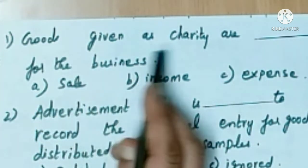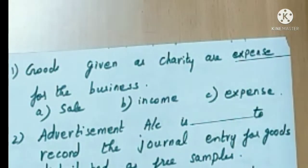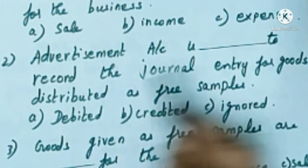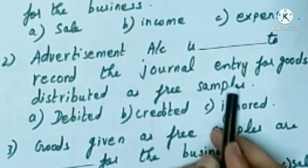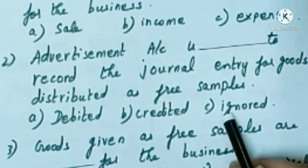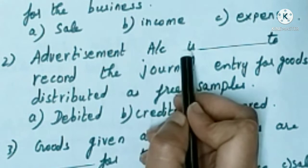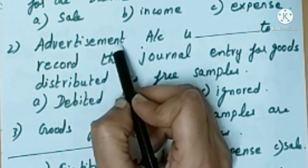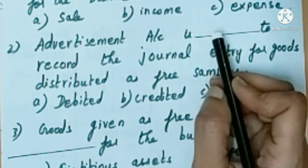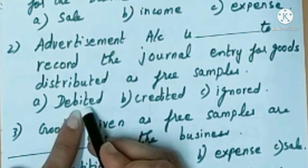Advertisement account is used to record the journal entry for goods distributed as free samples. Option A: debited. Option B: credited. Option C: ignored. Advertisement is an expense. We have to debit advertisement account. We already know that expenses are debited according to the nominal account rule — debit all expenses and losses. So advertisement account is debited. Option A is the answer.